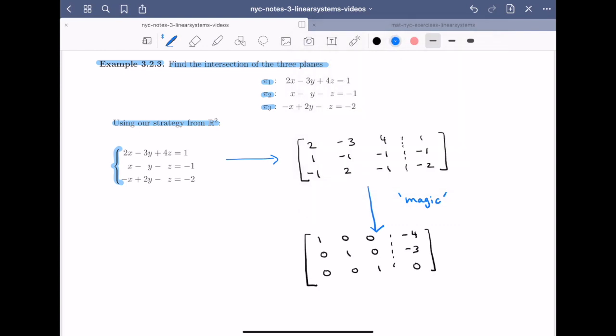Once we have this reduced form of the augmented matrix we can easily see the solution set. Row 1 tells me that 1x plus 0y plus 0z equals minus 4, which simplifies to x equals minus 4. Row 2 tells me that 0x plus 1y plus 0z equals minus 3. Finally from the third row, 0x plus 0y plus 1z equals 0, giving z equals 0.